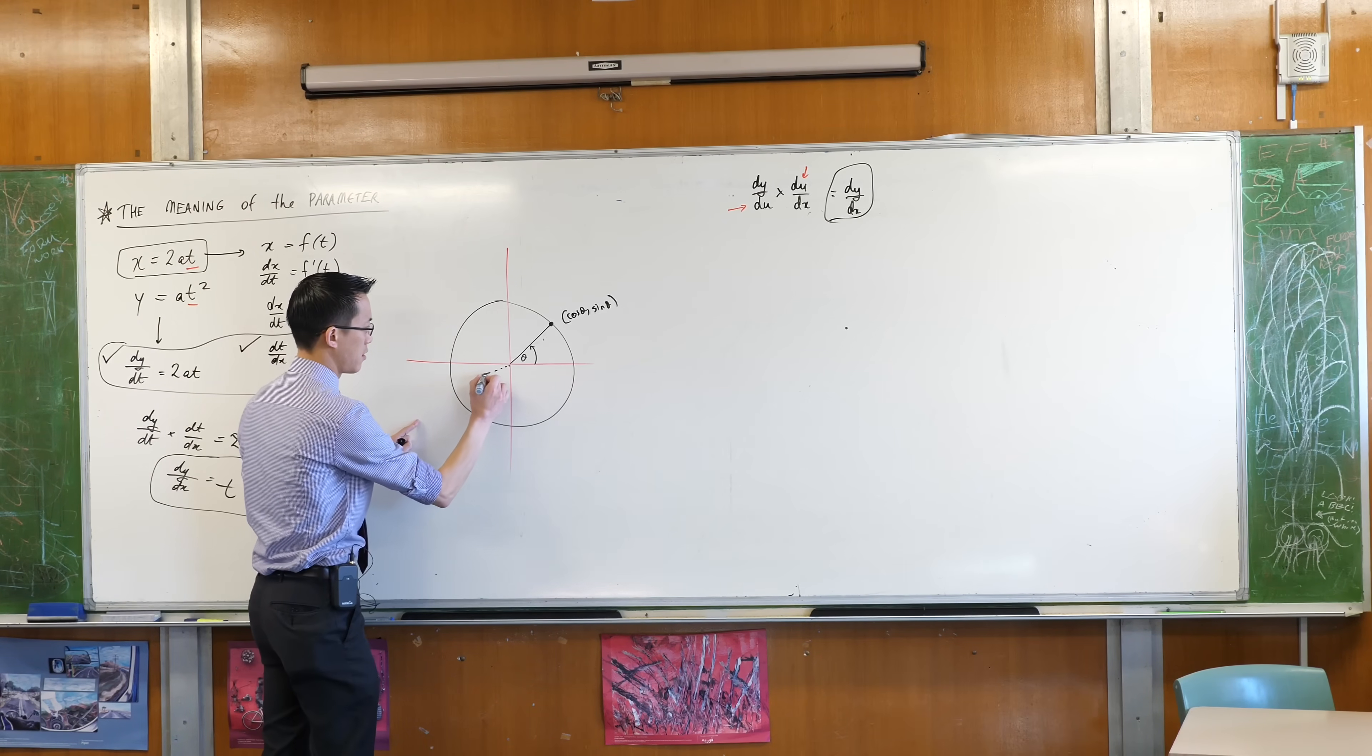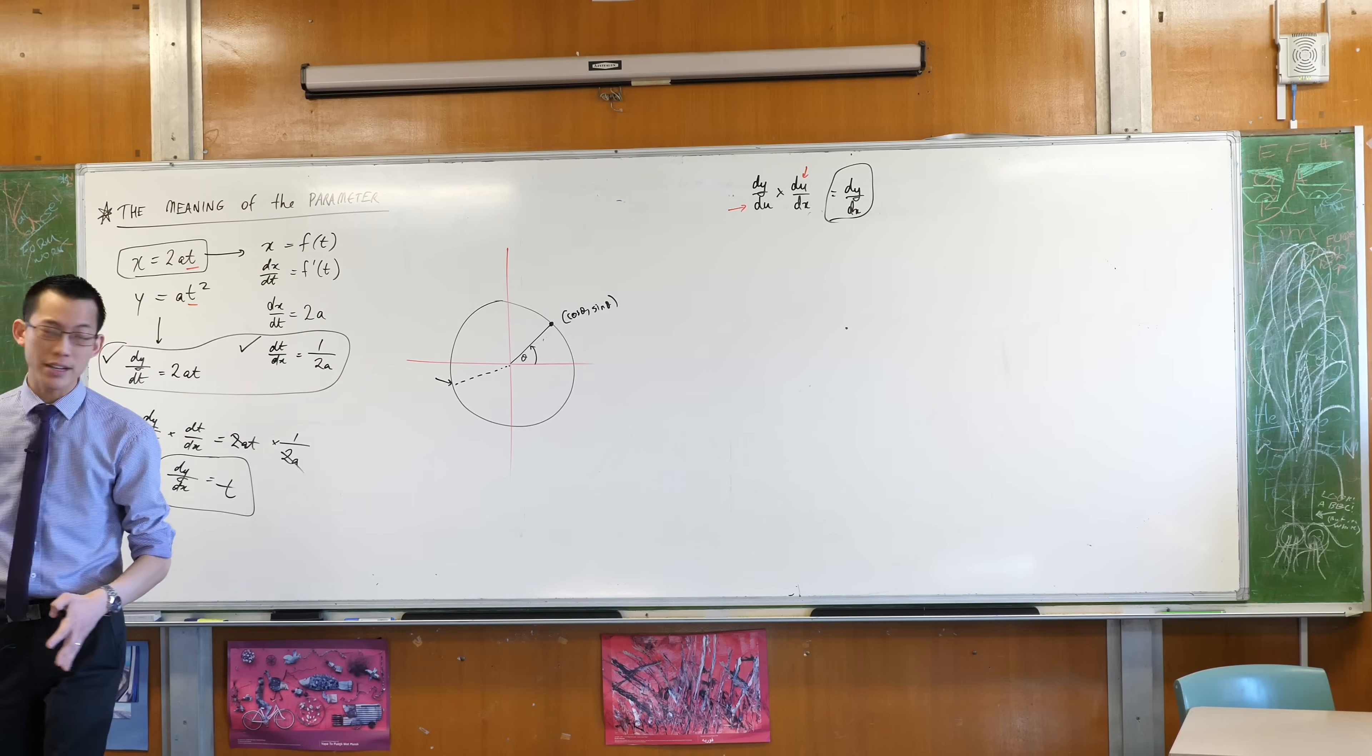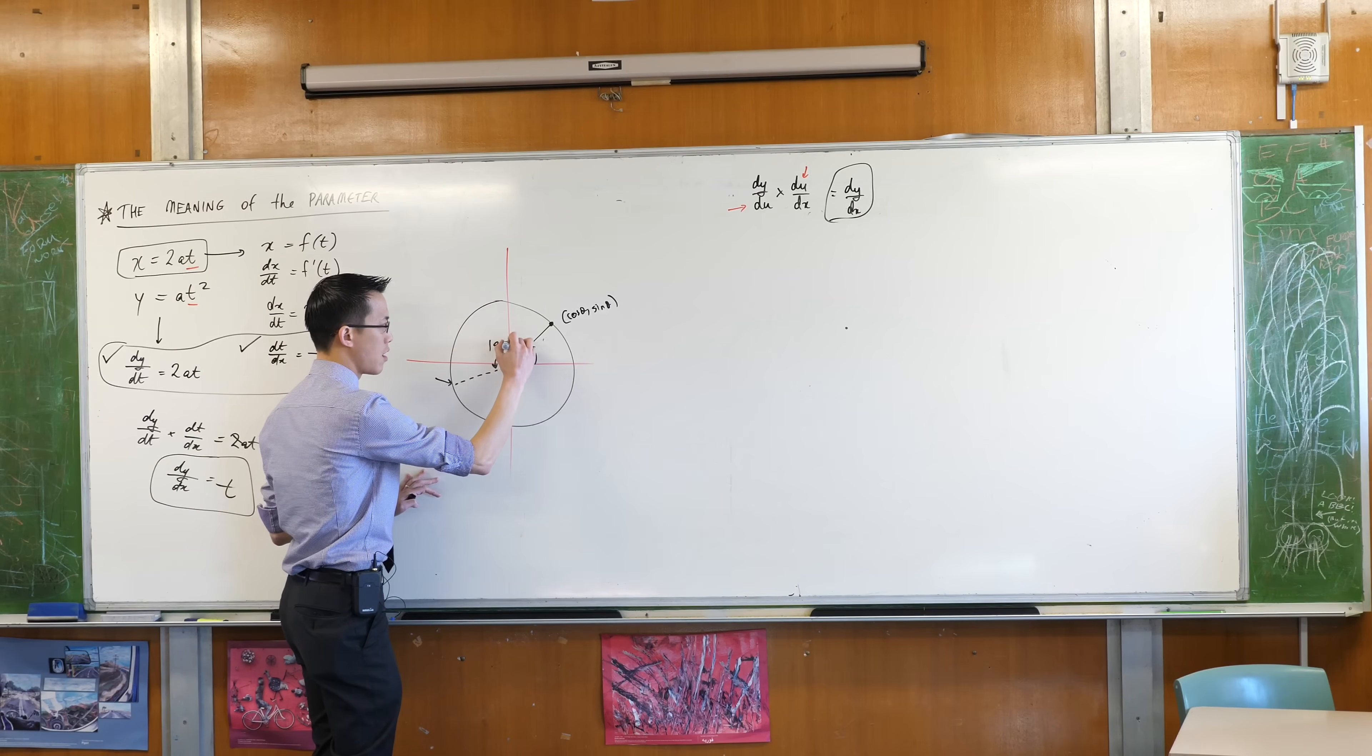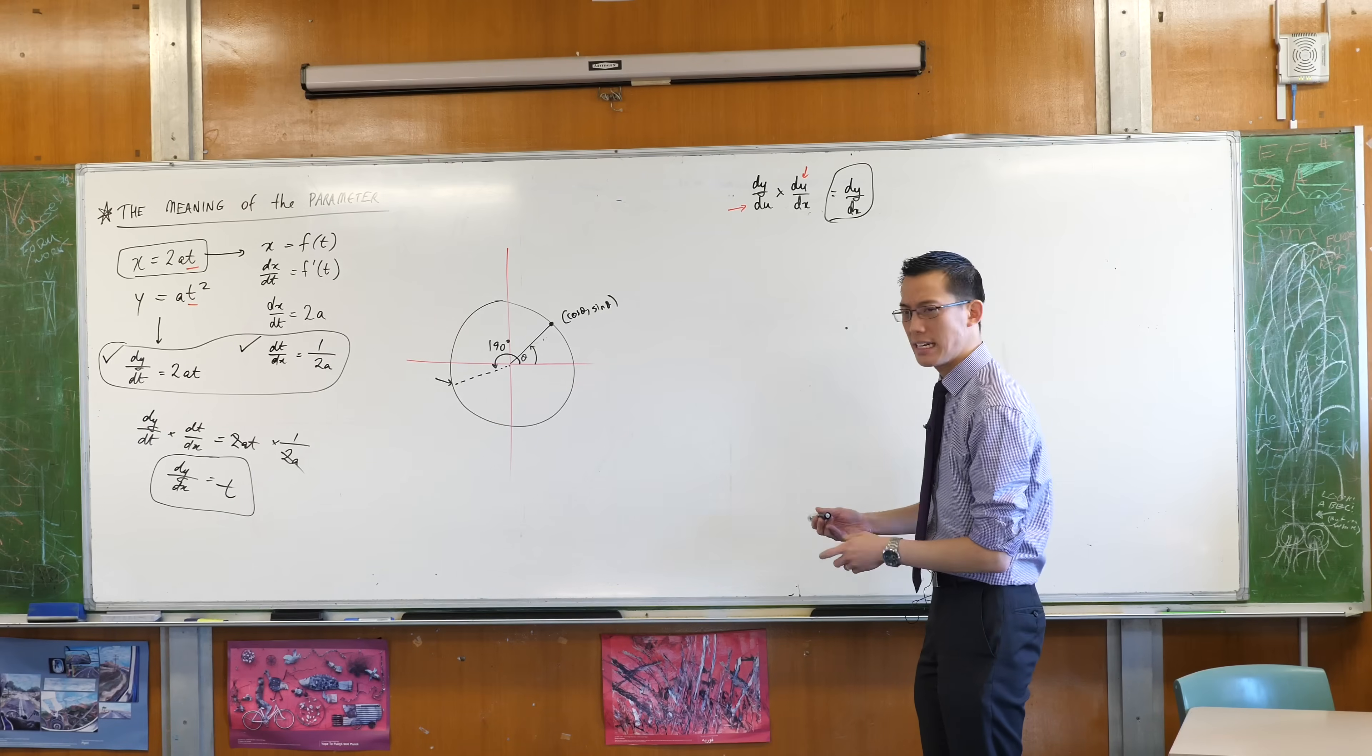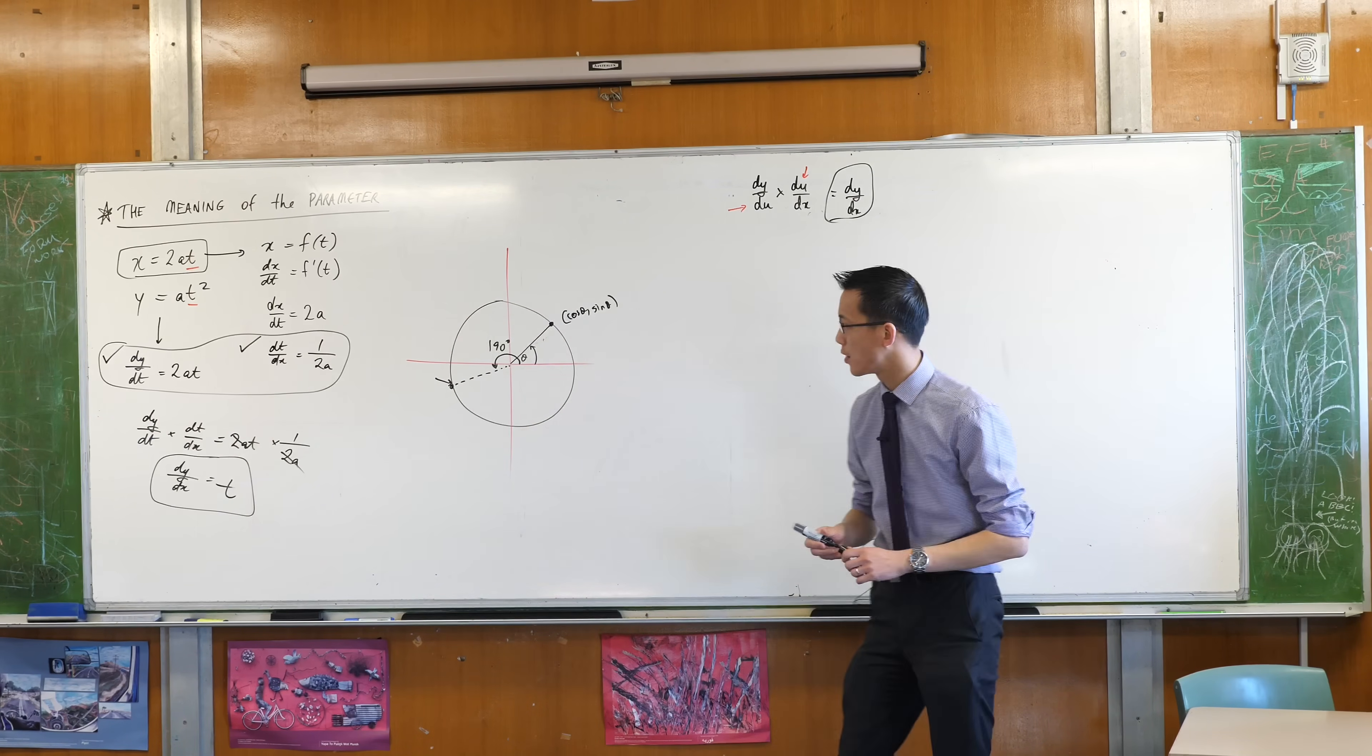190 degrees, somewhere like that. If I give you 190 degrees, then you know conclusively where you are on the unit circle. In other words, it's unique, right? 190 degrees can't be anywhere else on the unit circle, it gives you this spot and only this spot.